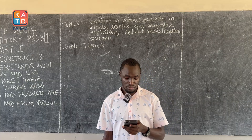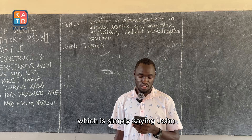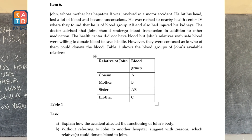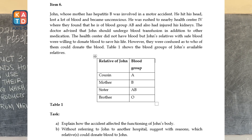Item 6 presents a scenario: John, whose mother has hepatitis B, was involved in a motor accident. He hit his head, lost a lot of blood, and became unconscious. He was rushed to a nearby health center where they found he is of blood group AB and had also injured his kidneys. The doctor advised that John should undergo blood transfusion. The health center did not have blood, but John's relatives with safe blood were willing to donate. However, they were confused about who could donate, and a table shows the blood groups of John's available relatives.